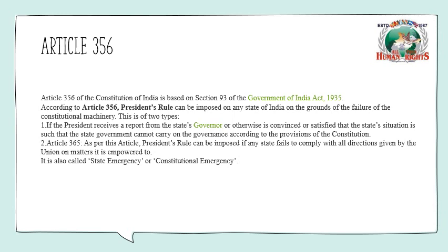Article 356 is basically based on Section 93 of the Government of India Act, 1935. Article 356 should be imposed on any state when these two certain conditions are satisfied.